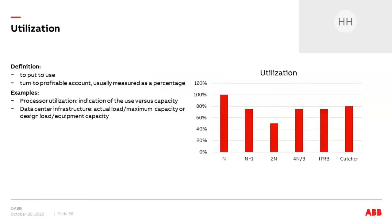The idea is: how can we increase utilization and decrease data center costs without impacting reliability? Utilization is measured as a percentage. With a simple N system, you can get up to 100% design utilization. Depending on which market segment, your actual target utilization may vary. Enterprise data centers usually utilize components to a maximum of 80% — if they get more than 80% on a UPS, it's time to buy another UPS. Co-location and hyperscale are more likely to design for utilizations as high as possible.